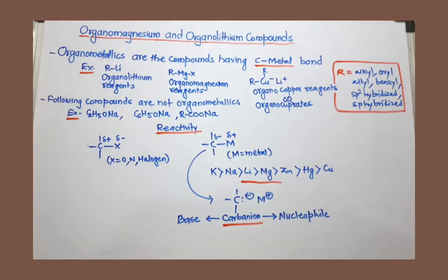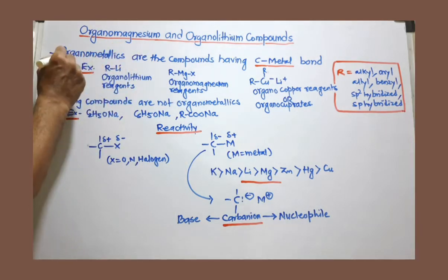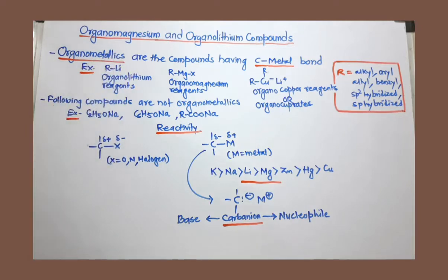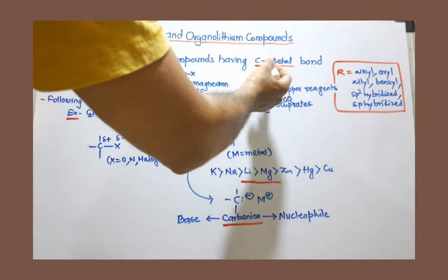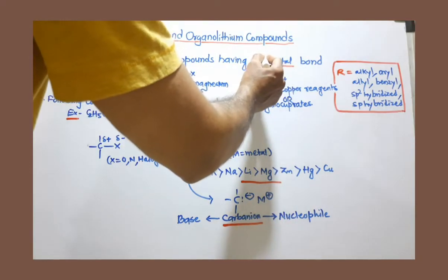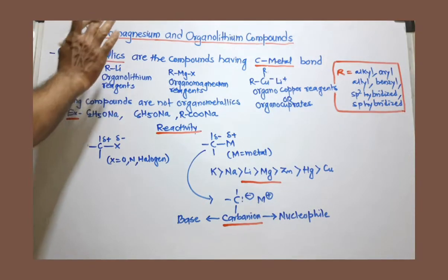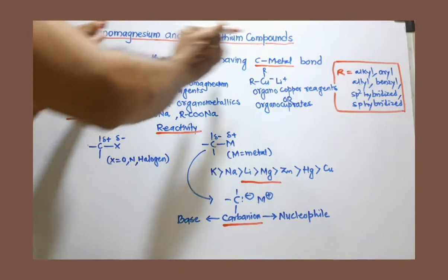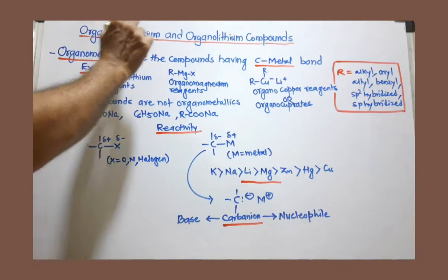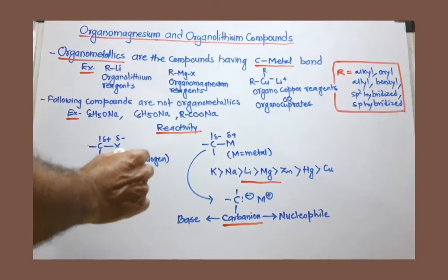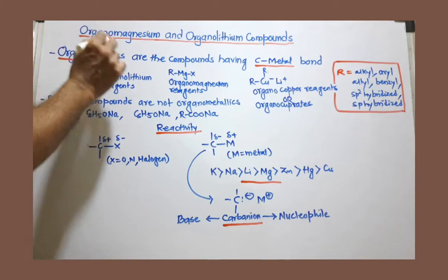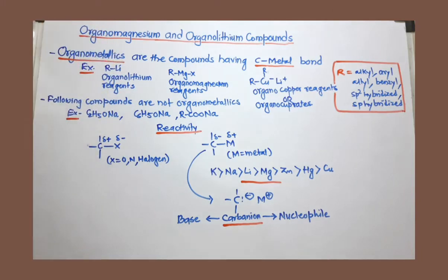Organomagnesium and organolithium compounds, these compounds are also called organometallics. In fact, the compound or the organic compound having carbon-metal bond, you can see here, carbon-metal bond are called organometallics. So by using this definition,